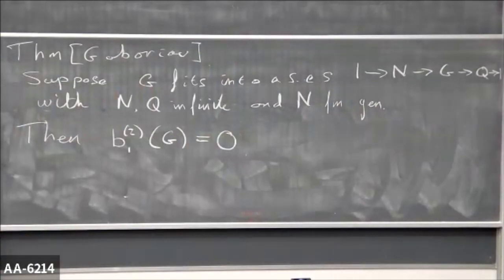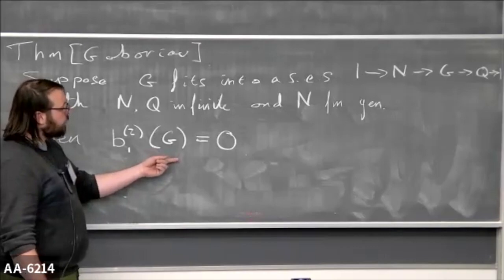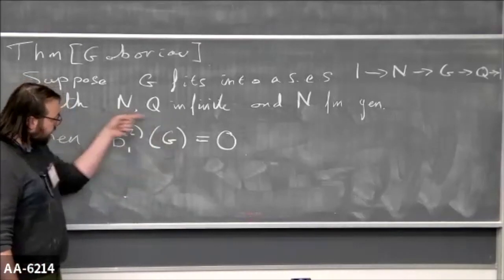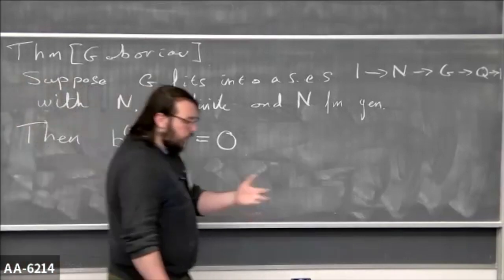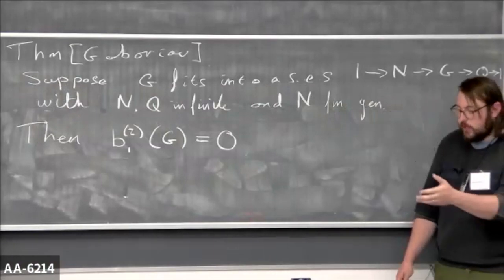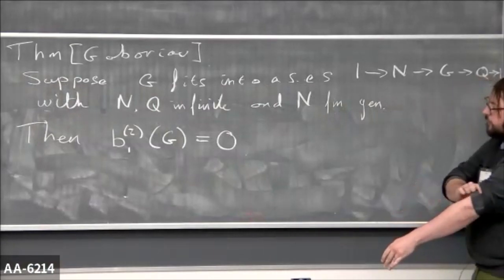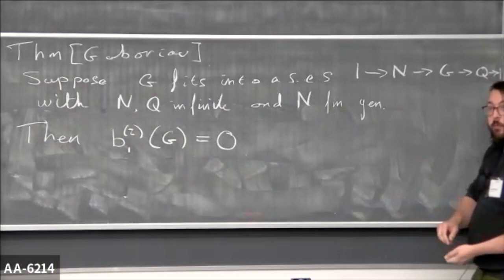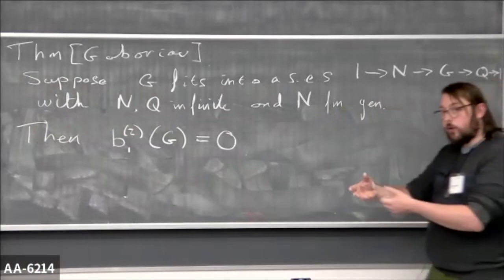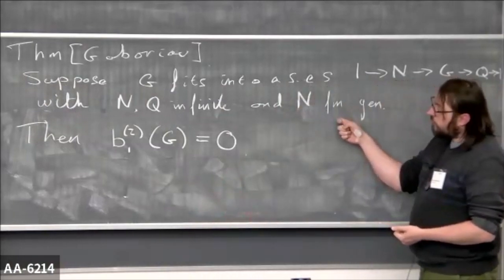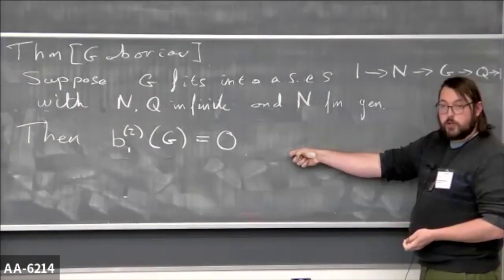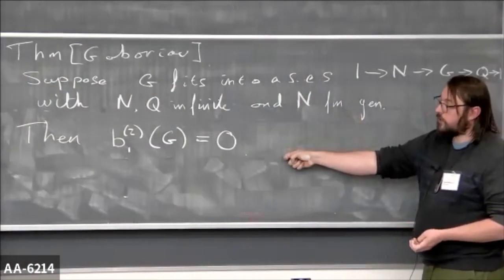So if you have an infinite, finitely generated normal subgroup with infinite quotient, then your first L² Betti number vanishes. This allows you to deduce a lot of things. For right-angled Artin groups, this allows you to compute the first L² Betti number — as we know about maps to Z with interesting kernels. In particular, if the graph is connected, the first L² Betti number is zero; if the graph is disconnected, you can prove it's non-zero. For hyperbolic three-manifolds, it tells you the first L² Betti number vanishes.